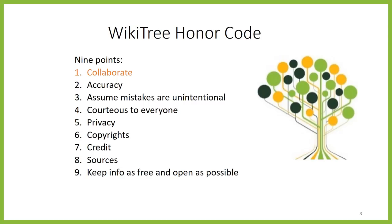First off, we collaborate. When we share ancestors, we work together on the same ancestor profiles. We care about accuracy — we are always aiming to improve upon our worldwide family tree and fix mistakes. We know that mistakes are inevitable and we don't want to be afraid to make them. We assume that mistakes are unintentional when others make them and ask for the same understanding. We know misunderstandings are inevitable and we try to minimize them by being courteous to everyone, even those who don't act accordingly.